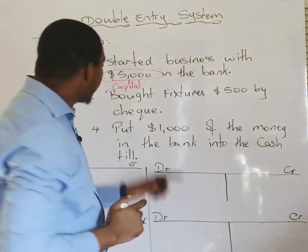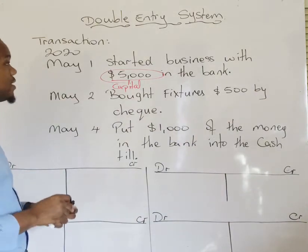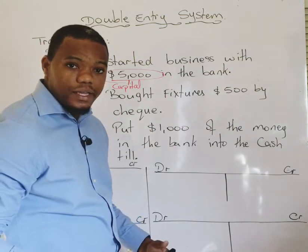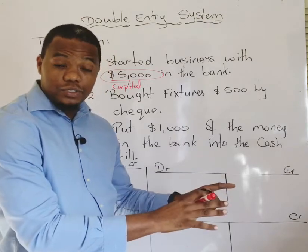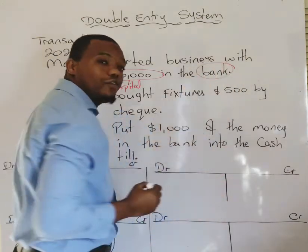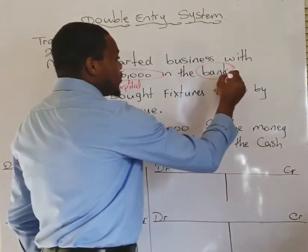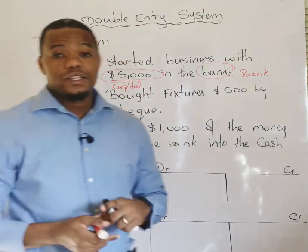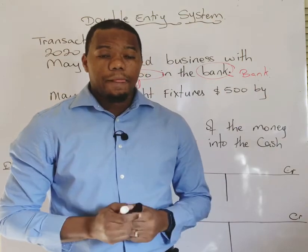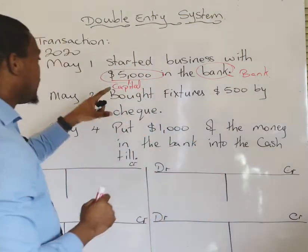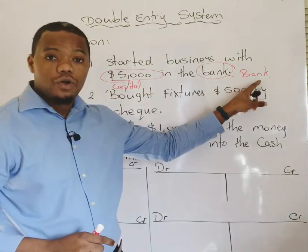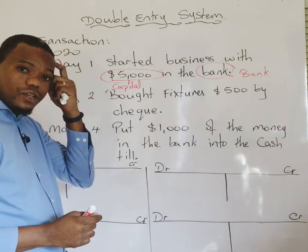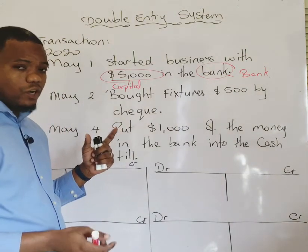Because we are starting business and investing our own money, this five thousand dollars is what we call capital. So right away we know we need to make an entry in the capital account. The transaction also says we started business with five thousand dollars in the bank, so the bank is obviously the next account needed. The two accounts affected are capital and bank — that is the first question answered.